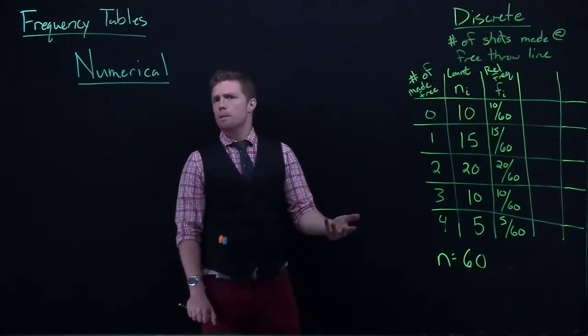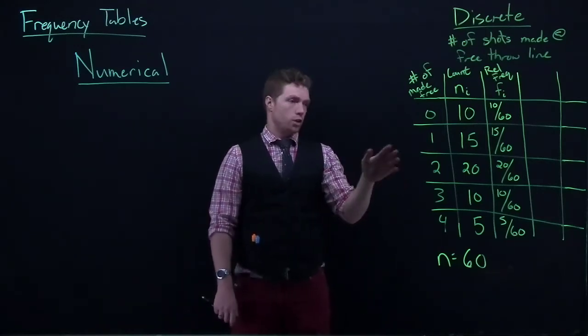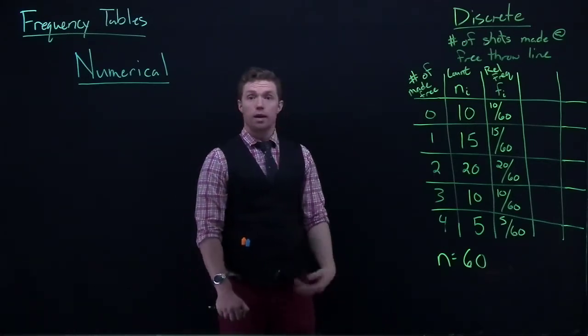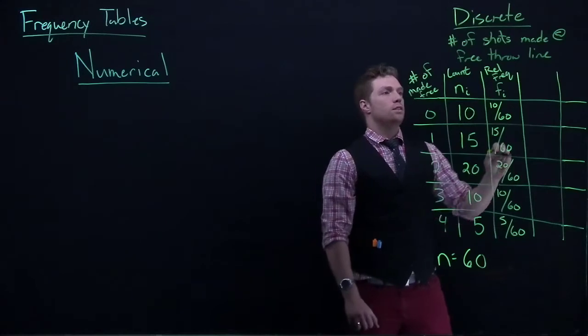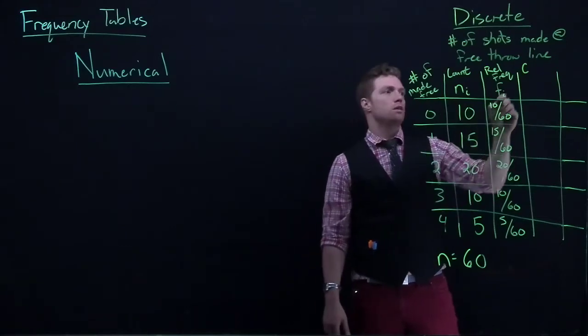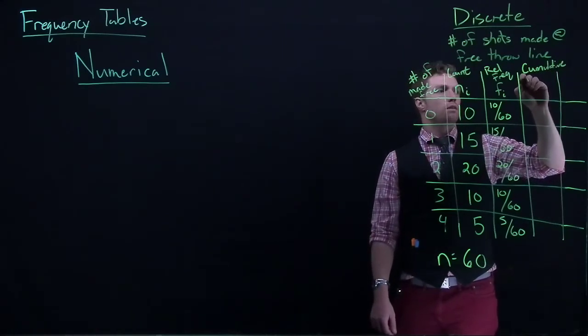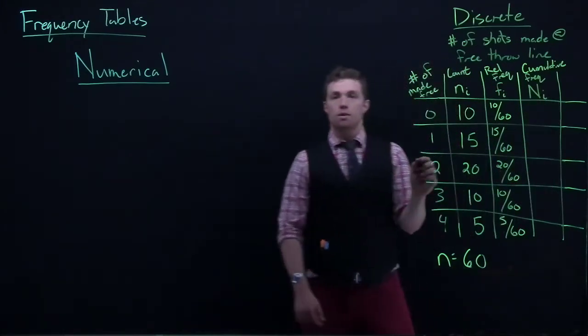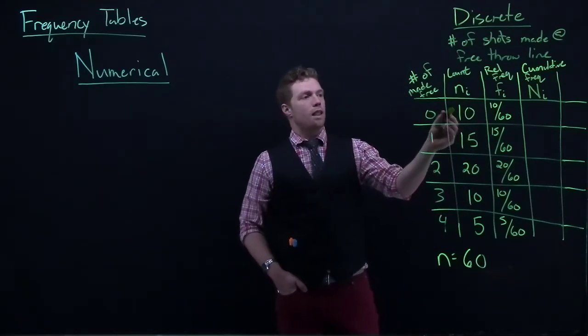Now suppose I pose a different question. I want to know how many times did he make two free throws or fewer in a game that he played in. Well we can answer this question with another column. So the next column that we need, this is the count and this is the relative frequency. This is going to be the cumulative count. Sometimes we call it the cumulative frequency or the cumulative count. It's going to be capital NI, and it's going to be the sum of all of the instances from a particular class or above.